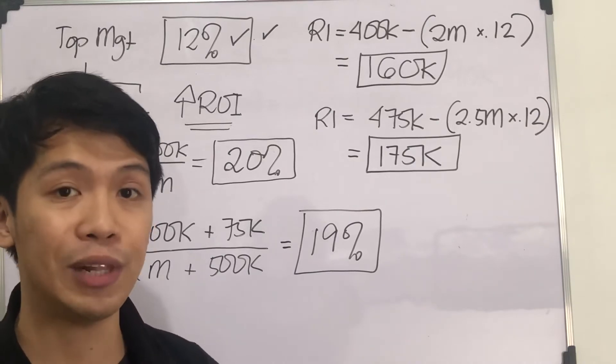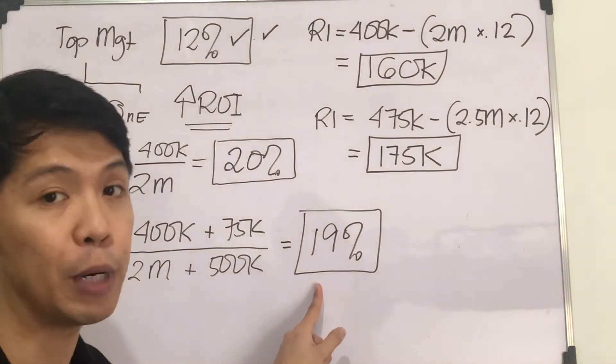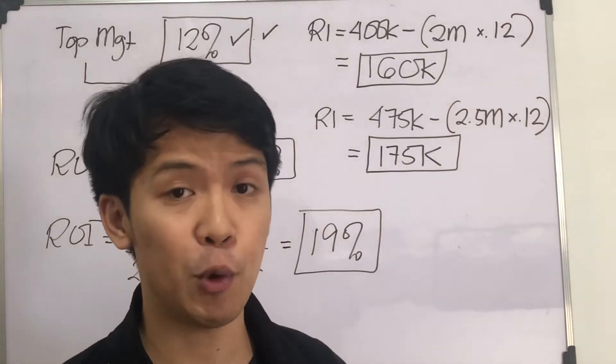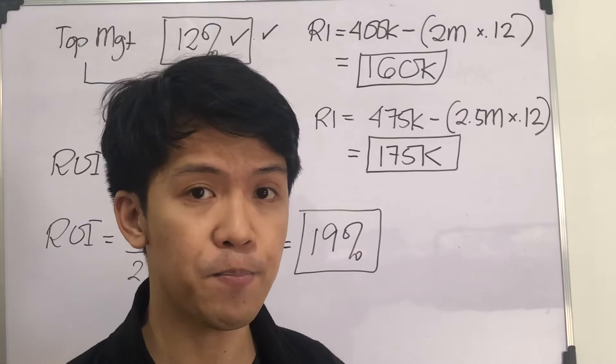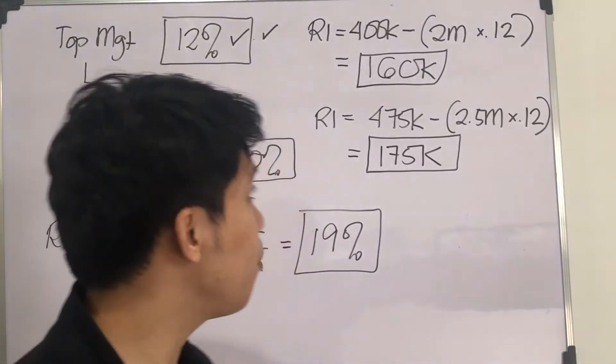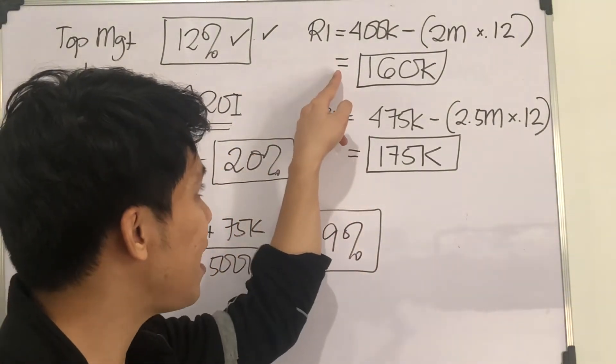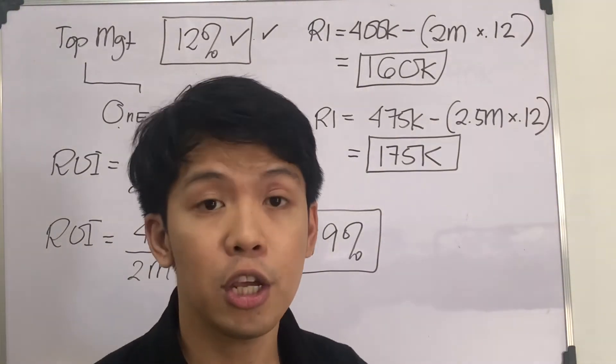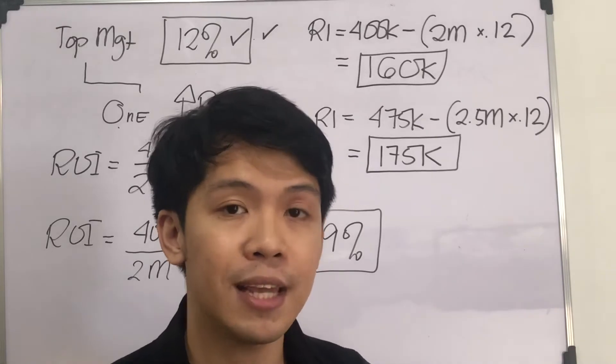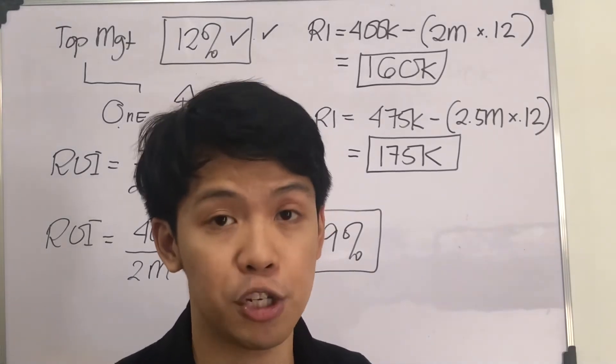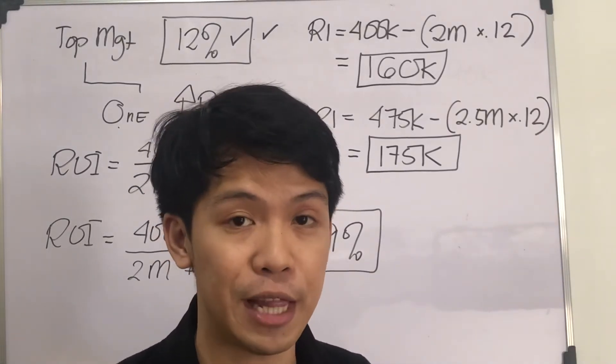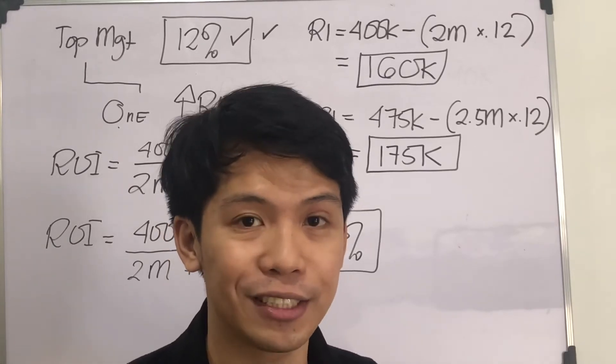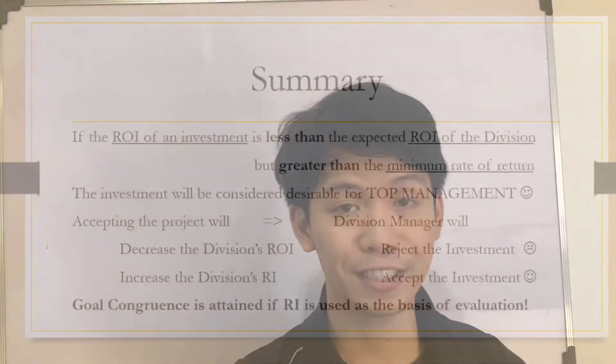Our ROI will decrease from 20% to 19%. Meanwhile, if our basis of evaluation is residual income, our residual income will increase from $160,000 to $175,000 if we're going to take the project. In short, we will be motivated to take the project just as top management desires. In this scenario, there is goal congruence. So please refer to the following summary.